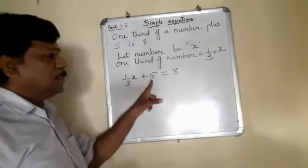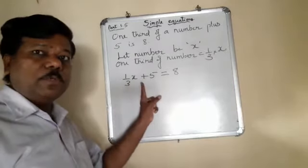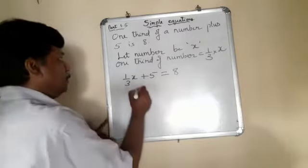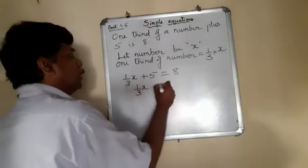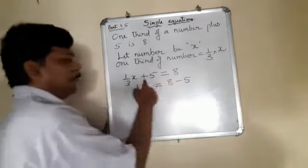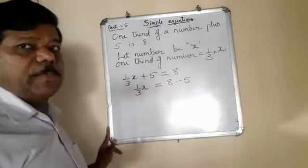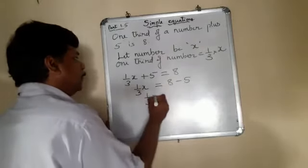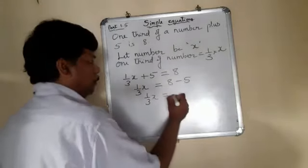So I don't want this plus 5. So I am going to transpose this plus 5 to the other side. So this becomes 1 by 3x is equal to 8 minus 5. Here plus 5. On the other side, it becomes minus 5. So 1 by 3x, therefore, is equal to 3.